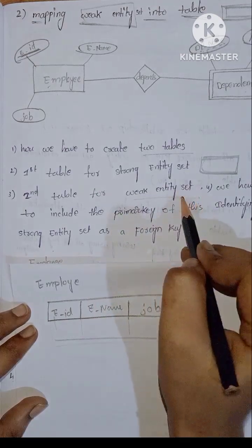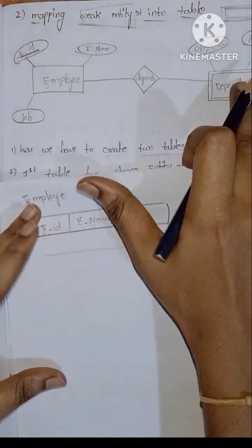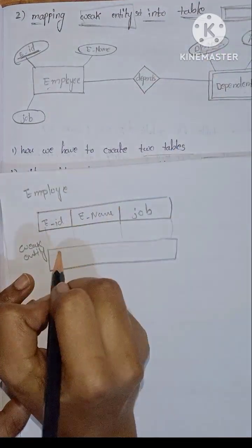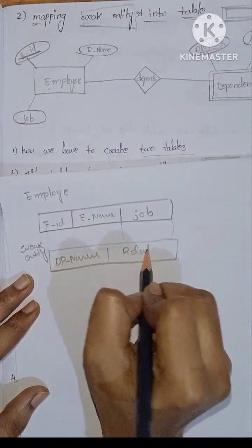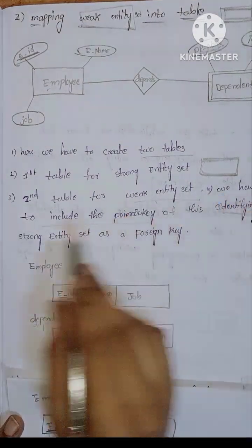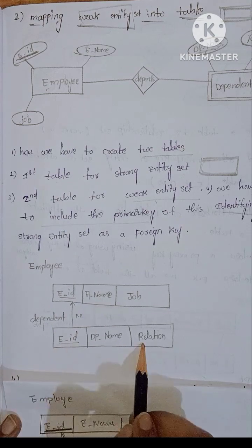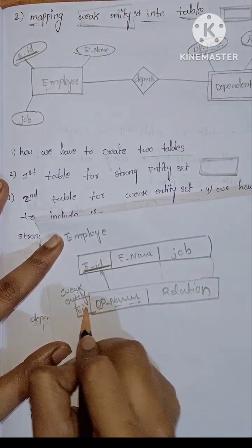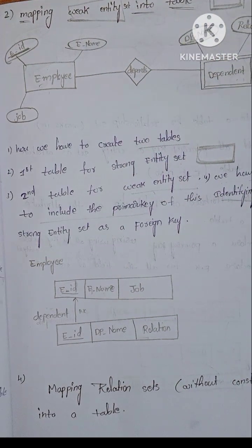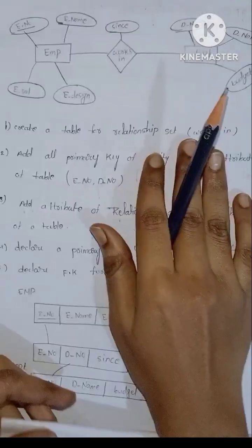The second table is for the weak entity set. We have to include the primary key of the identifying strong entity set as a foreign key. We include employee ID as the foreign key, and also add dependent name. This combination forms the primary key of the dependent table.